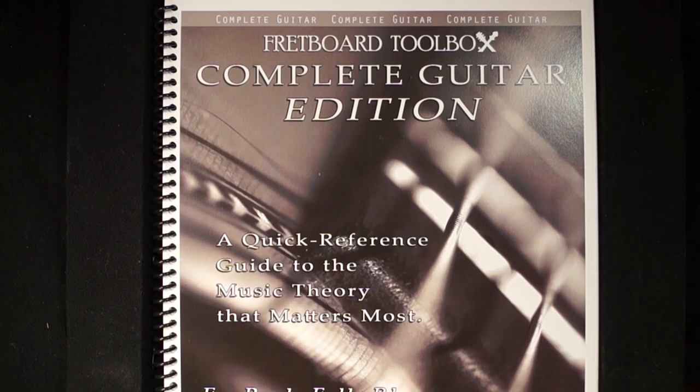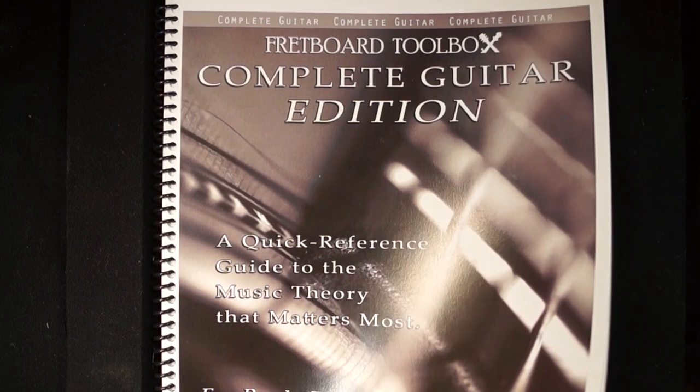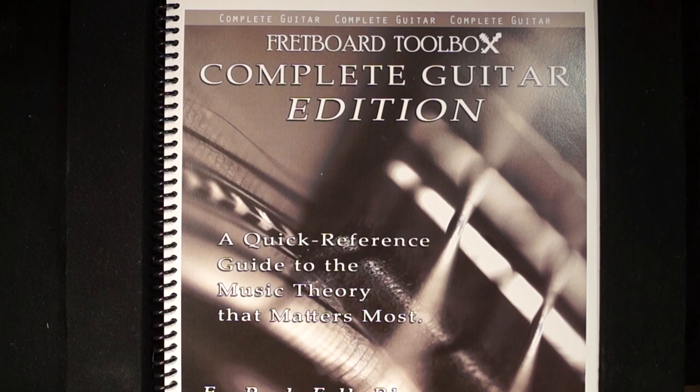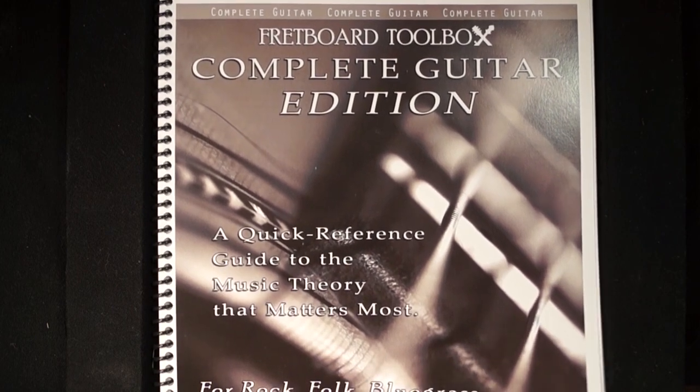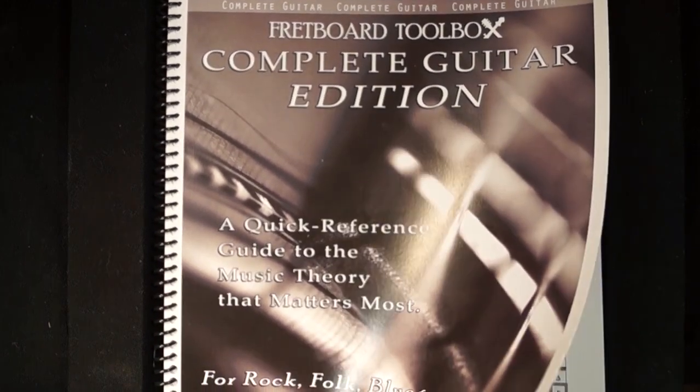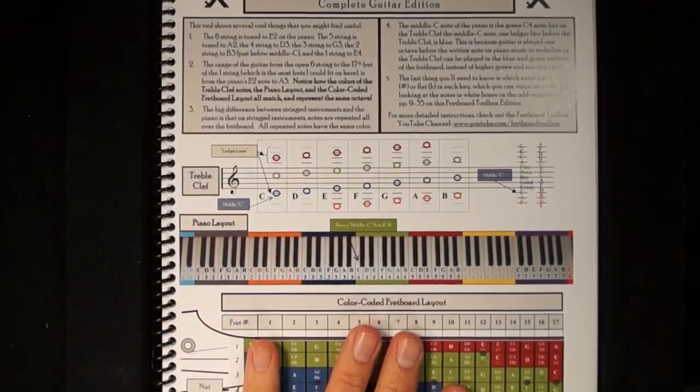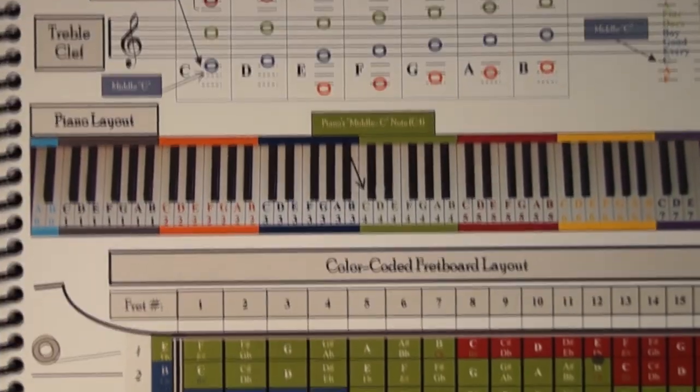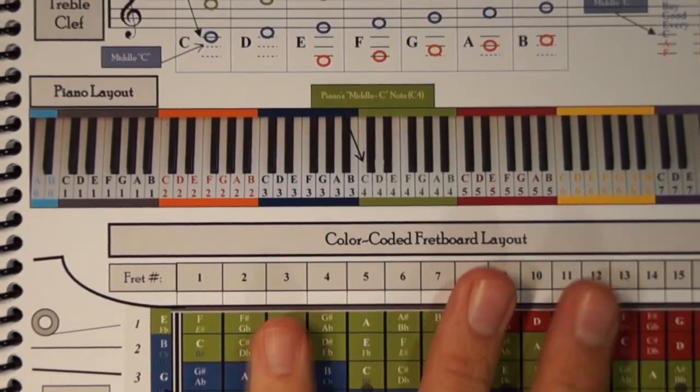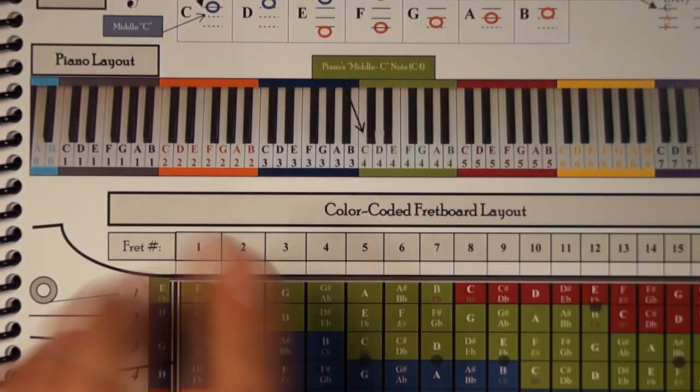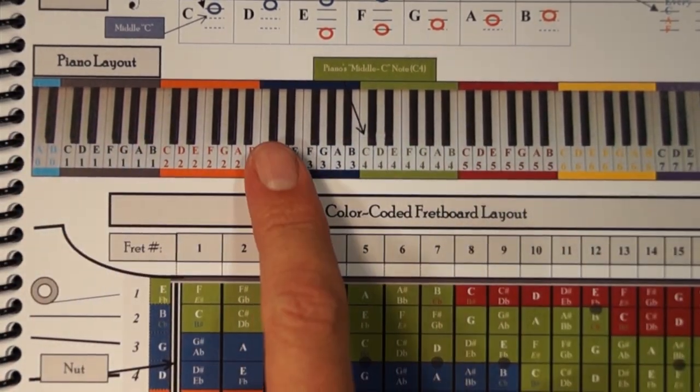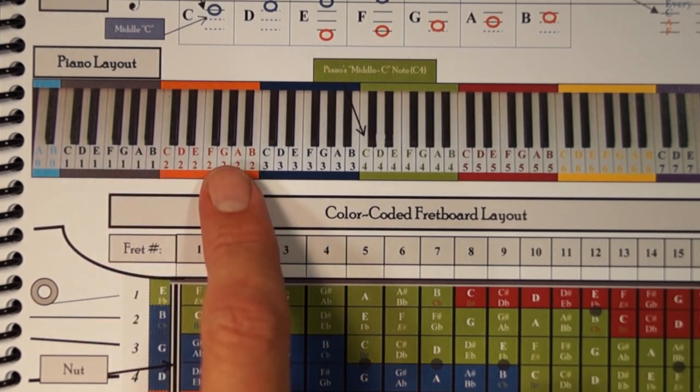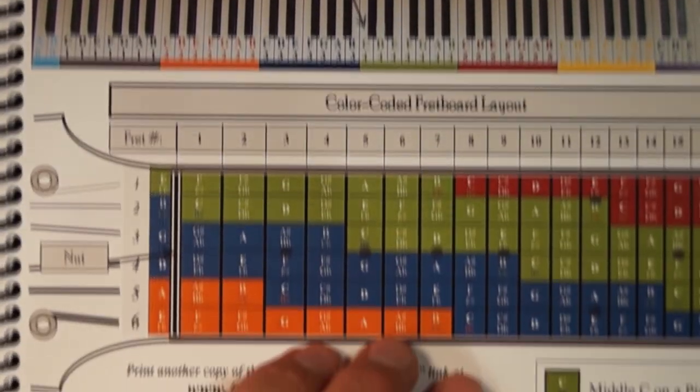If you take a look at a Fretboard Toolbox complete guitar edition and flip to page eight, you will see a whole bunch of different stuff. I set all this up to teach myself because I wanted to know how this all relates. If you can see a whole 88-key piano here and think of each of the octaves starting with C as a different color...